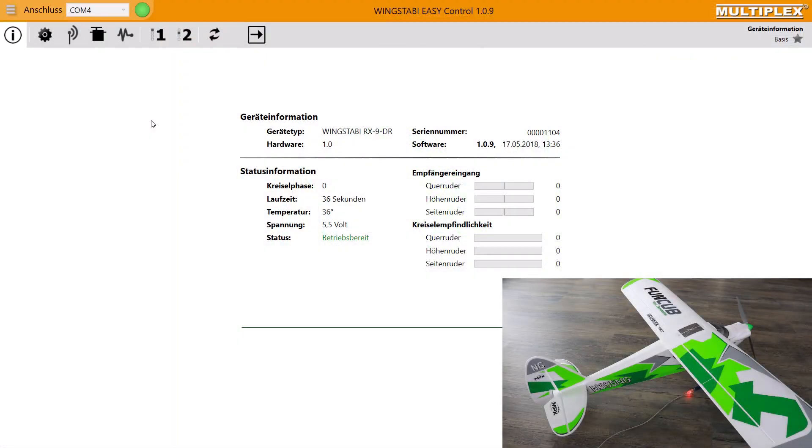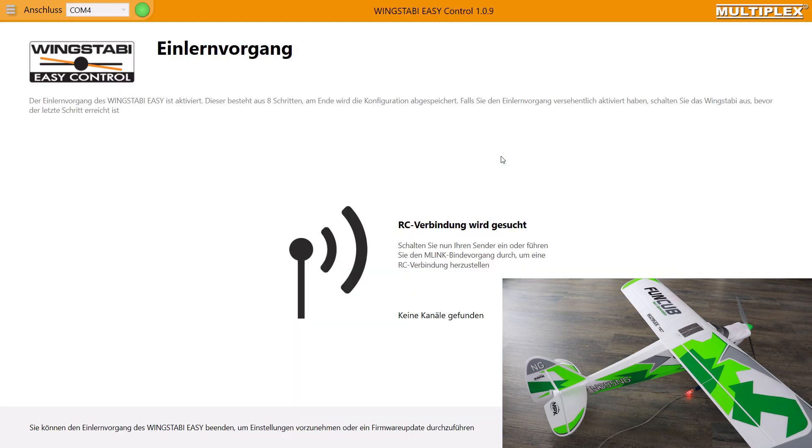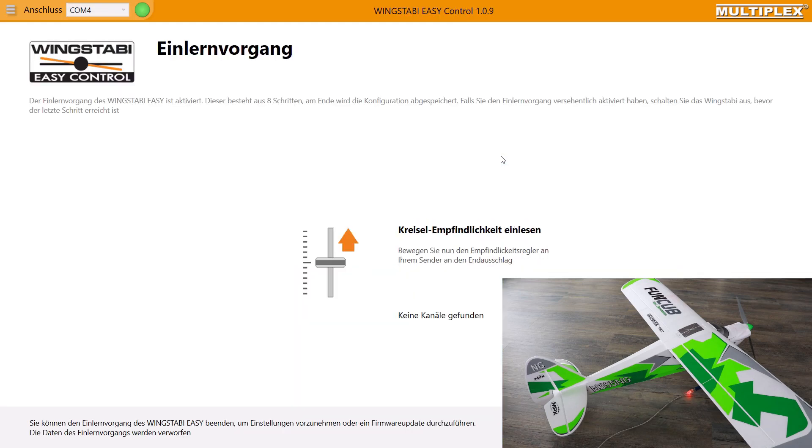So how does the teach-in process work in detail? You have two possibilities. You can use your teach-in plug and connect it with your MSB port at your Wing Stubby, or the second possibility is to use your Multiplex launcher. Here you have to click the start teach-in process button. But notice, before you start the teach-in process, you have to select a three proportional channel on your transmitter for the gain, like a slider or something else. No switch, a slider. After starting the teach-in process, Wing Stubby is searching for the RC connection. The first step is to teach-in the gain. In my case, channel 8. Here you should move your slider. It's important to move your slider to the maximum endpoint.